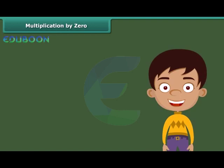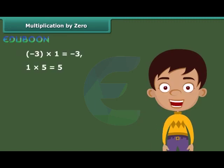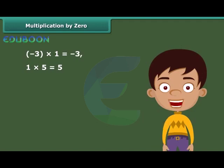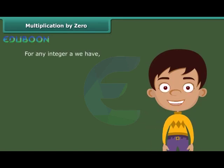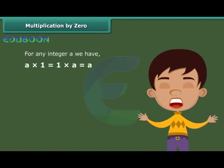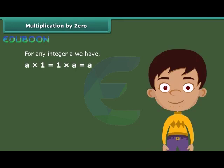When we multiply 1 with any integer, we get the same integer. For example, minus 3 into 1 is equal to minus 3, and 1 into 5 is equal to 5. That means 1 is the multiplicative identity for integers. In general, for any integer a, a into 1 is equal to 1 into a, which equals a.